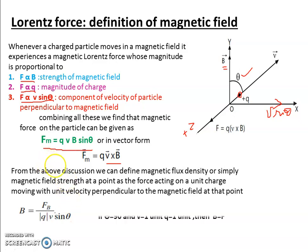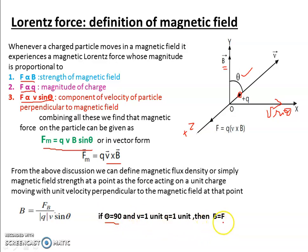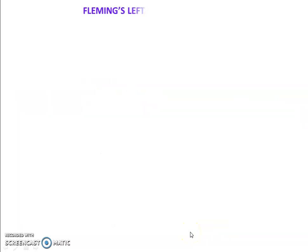If theta is 90 degrees — meaning velocity is along the X axis and magnetic field is along Y — then sin theta will be maximum, and therefore the force will be maximum. If velocity is 1 and charge is 1, then B equals F, meaning the magnetic field intensity equals the force experienced by the charge particle.